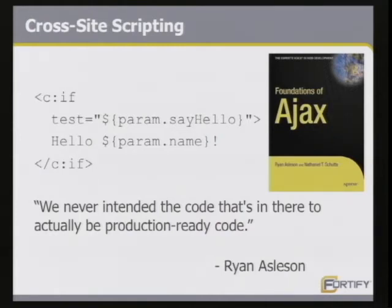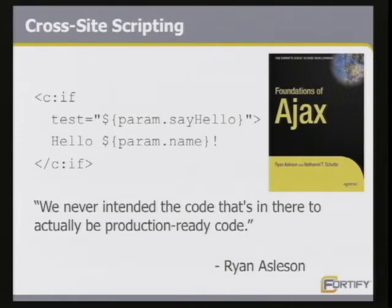Another non-functional security error: a simple cross-site scripting bug. You read a request parameter in a JSP and echo it back into the dynamic HTML you're generating. The interesting thing here is that it's from a web programming book, Foundations of Ajax, which is actually a pretty good book for learning Ajax programming. When we contacted the authors about this bug, they effectively said they didn't expect anyone to really use the code in the book — it was just an example. This is a situation where we're not teaching people how to do it right, and we're allowing known mistakes to affect us again and again.